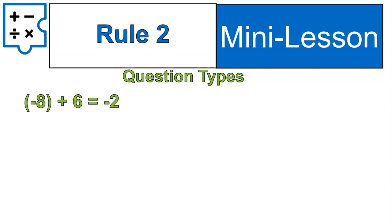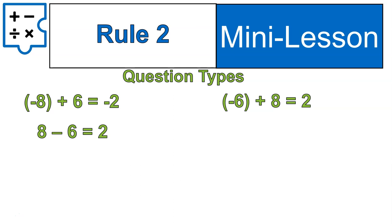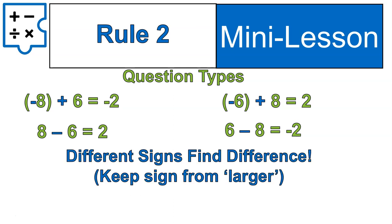Here's the rule for adding or subtracting numbers when you've got different signs. Here are the question types: negative 8 plus positive 6; negative 6 plus positive 8; 8 minus 6; and 6 minus 8. You'll notice the signs in each are different. When the signs are different, here's the rule: find the difference. Different signs — find the difference. So you take those two numbers, 8 and 6, and subtract. 8 minus 6 is 2.